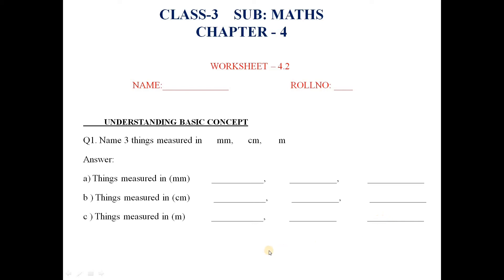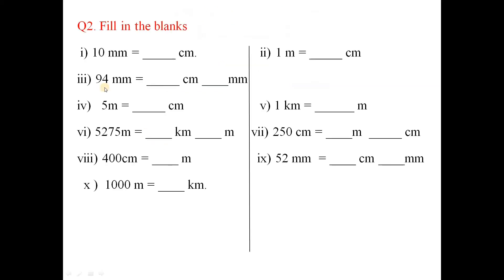Here you have to write the length yourself. For unit conversion: 10 millimeter is equal to 1 centimeter. For example, 94 millimeter is equal to 9 centimeter 4 millimeter. Like this, you have to write the correct answer in the blank.